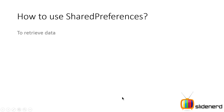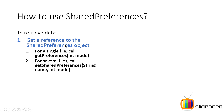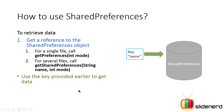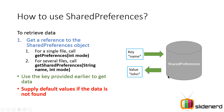Now let's talk about how to retrieve data from the Shared Preferences file. To retrieve the data, get a reference to the SharedPreferences object in the same way we just discussed. Use the key you provided earlier to get the data. For example, you can say: give me the value for the key 'name', and the XML file will return the value 'John'. This is the reason why you used the key in the previous step — so that you can use it to later access the stored value. Of course, you also have to handle default values if the data is not found, which we will look at in code.